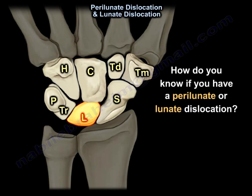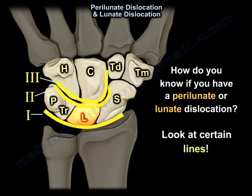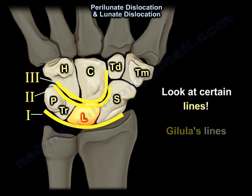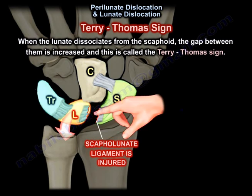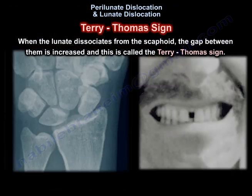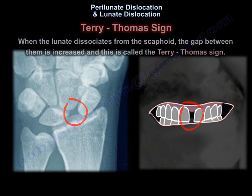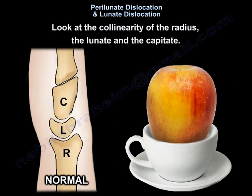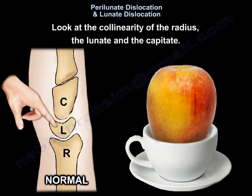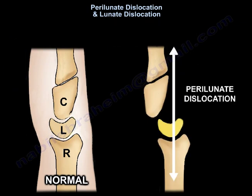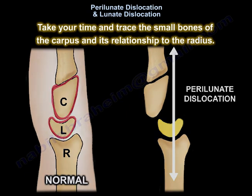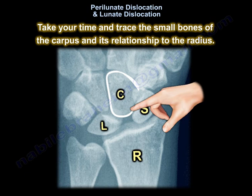How do you know you have a perilunate or lunate dislocation? You look at certain lines — you look at Gilula lines. You look at the Terry-Thomas sign, which is the gap between the scaphoid and the lunate. You look at the collinearity of the radius, the lunate, and the capitate. Take your time and trace the small bones of the carpals and their relationship to the radius.